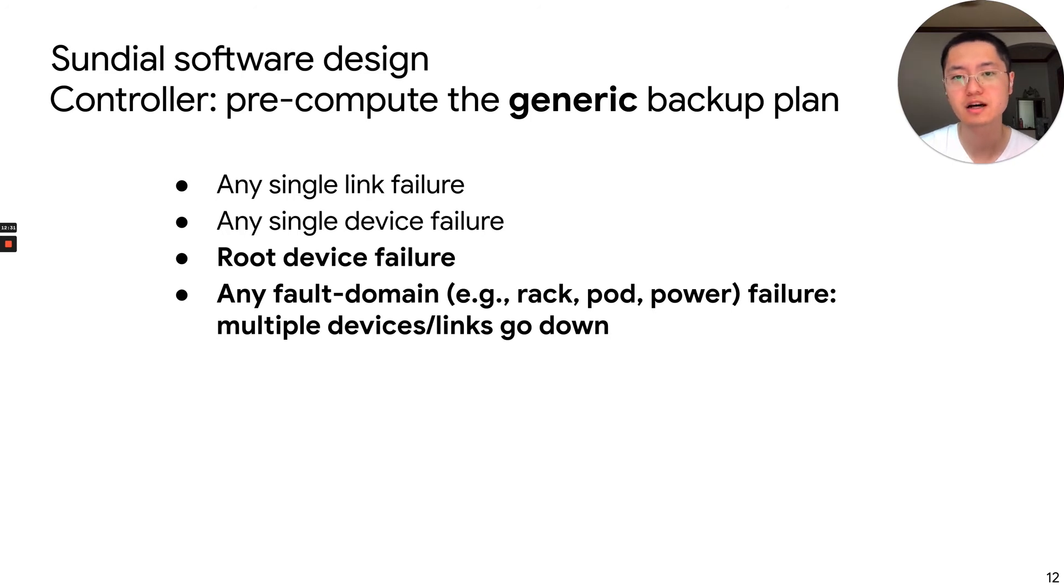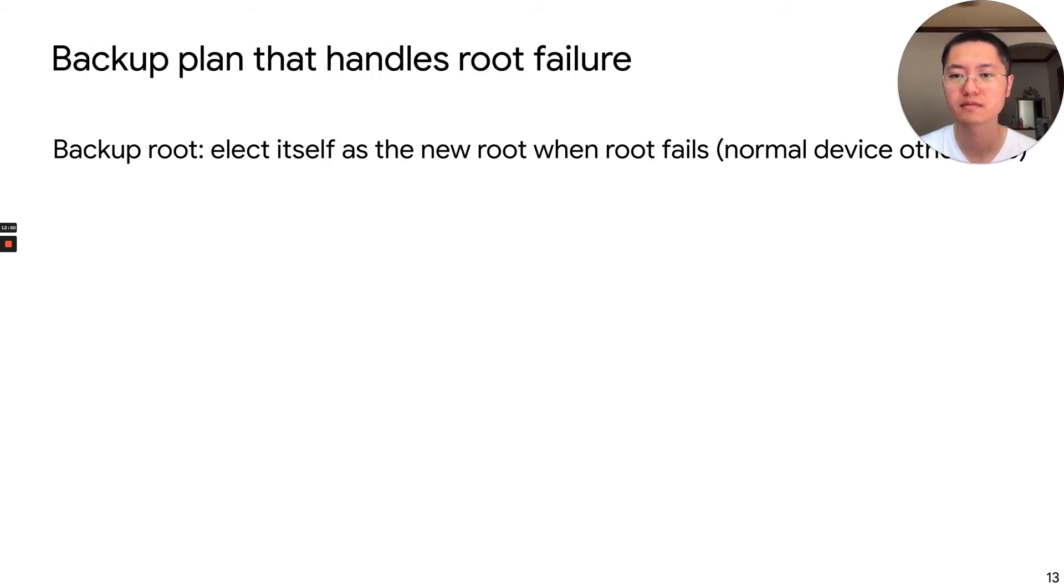In this talk, I will only focus on the root failure and fault domain failures. But all the four types are discussed in our paper. Because of that, the backup plan has two parts. The first is one backup parent per device, as we discussed, and also a backup root to handle the root failure. The backup root is a special node because it will elect itself as the new root when it detects the root fails. But under other failures, it should behave as a normal node.